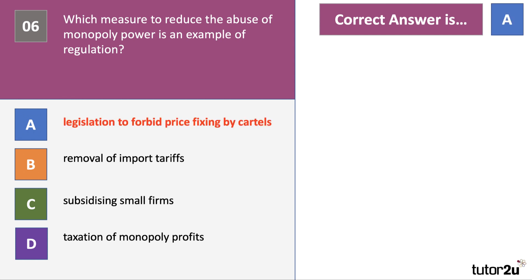Well, the correct answer here is A. So laws governing anti-competitive behavior including price fixing by a cartel, collusion, is regulation. Trade policy is B, and fiscal policy obviously is C and D, both examples of how you could use fiscal policy to control or to bring, correct for, or reduce the potential loss of welfare due to monopoly power.